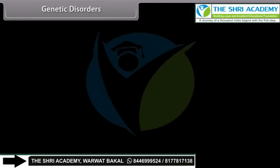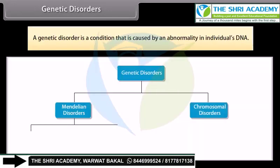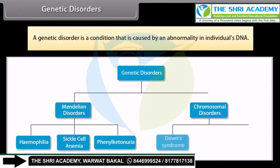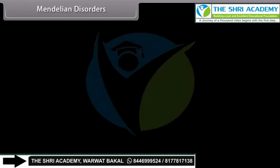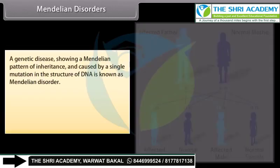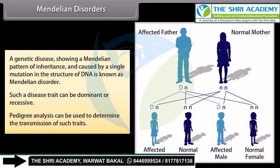Genetic disorders: Disorders showing a Mendelian pattern of inheritance and caused by a single mutation in the structure of DNA are known as Mendelian disorders. Such a disease trait can be dominant or recessive. Pedigree analysis can be used to determine the transmission of such traits.